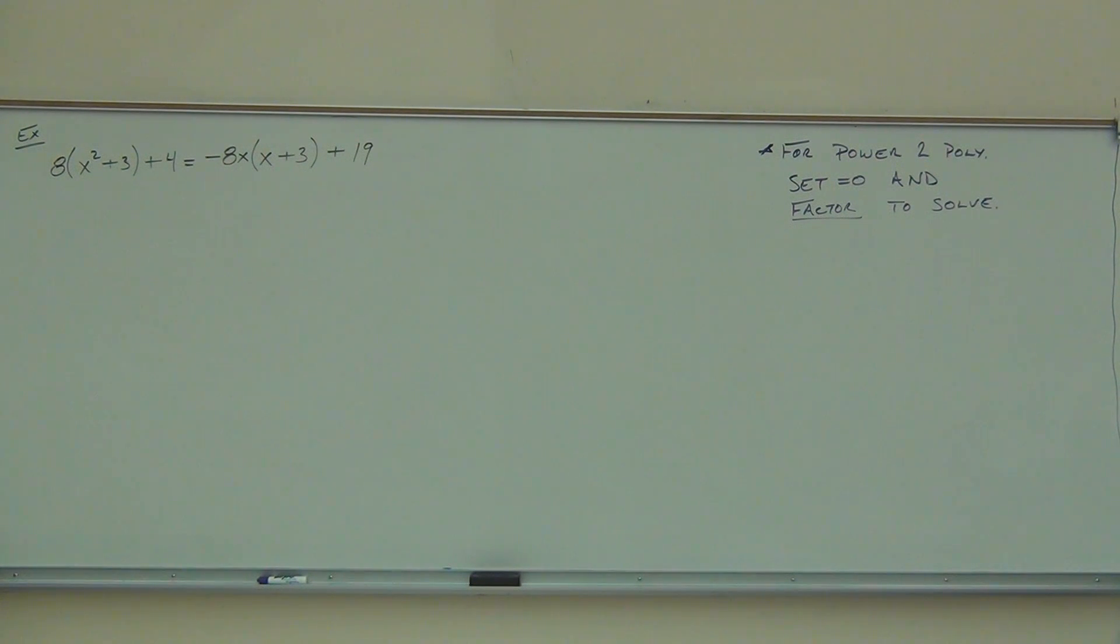Remember, if you have an x squared up there, that means you're going to factor. That means you have to get everything to one side and zero on the other side because otherwise the zero product property won't work. So make sure when you see that on your problems, get it over one side and then factor it. Chances are you're going to want to keep the x squared turned positive, so move things according to that.